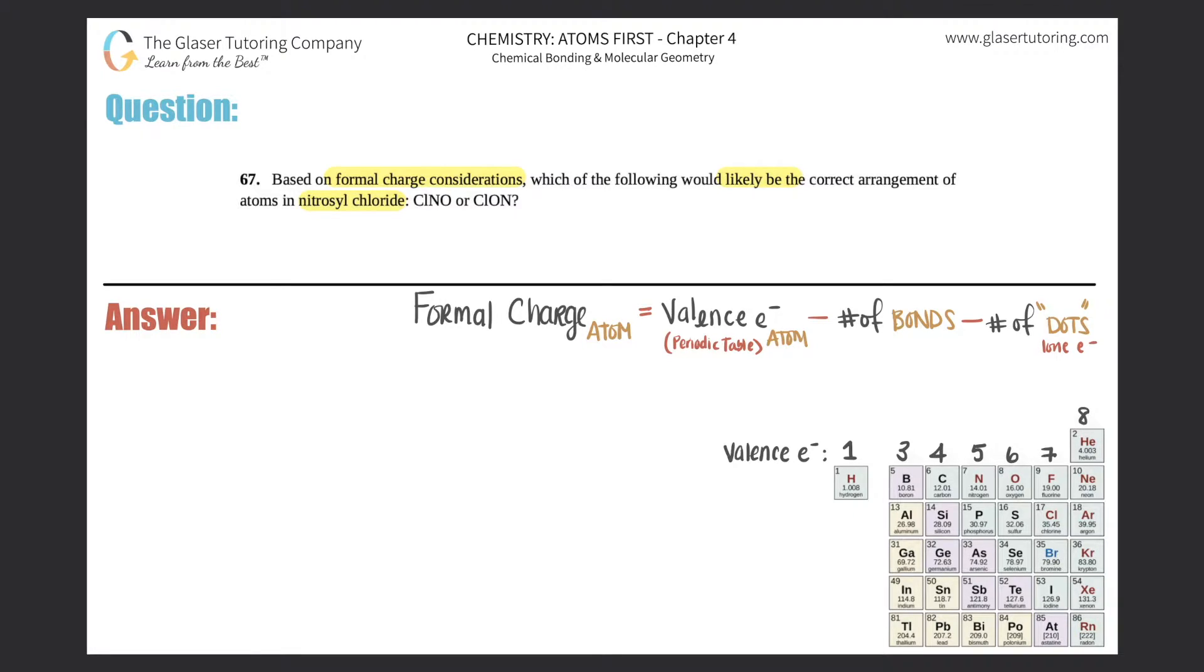Good question. So without even looking at formal charge considerations, we actually know which one of these is actually the correct formula. So we could even guess this without formal charges. Now, why do we know this? Because we know the rules for Lewis structures.